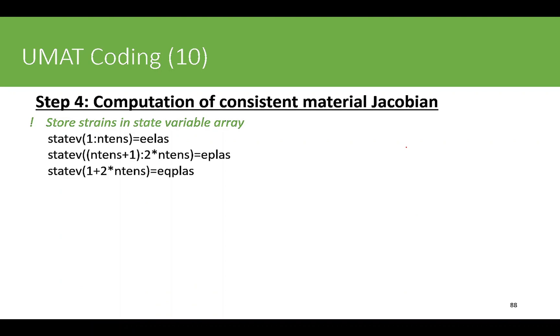Then we store the strains in state variables. State variables 1 to 6 are elastic strains, 7 to 12 are plastic strains, and 13 is the equivalent plastic strain. Then we end the subroutine. This way our implementation of UMAT code is finished.